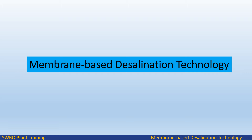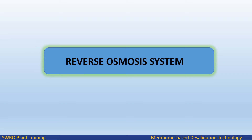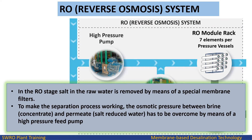Welcome to the Endless Learning training series on membrane-based desalination technology. In this video we will study the reverse osmosis system for a seawater reverse osmosis plant. In the RO stage, salt in the raw water is removed by means of special membrane filters. To make the separation process work, the osmotic pressure between brine, concentrate, and permeate has to be overcome by means of a high pressure feed pump.